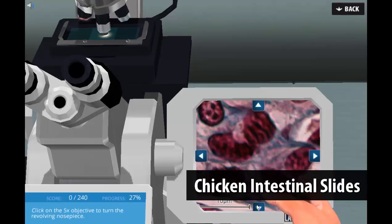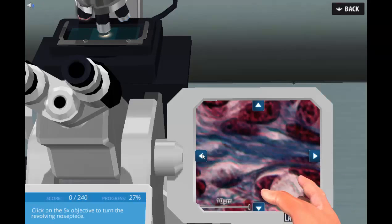They are presented with chicken intestinal slides that have been stained with aniline, orange G, and fuchsin.